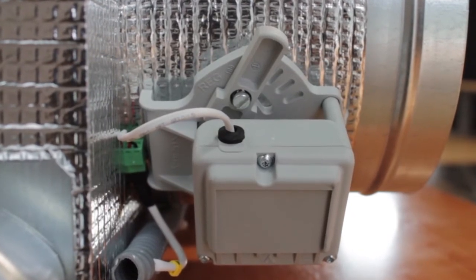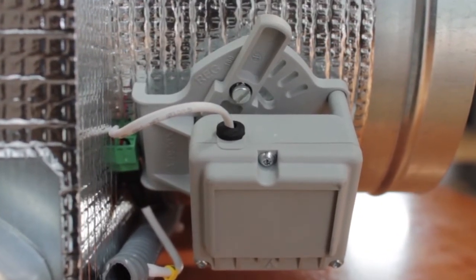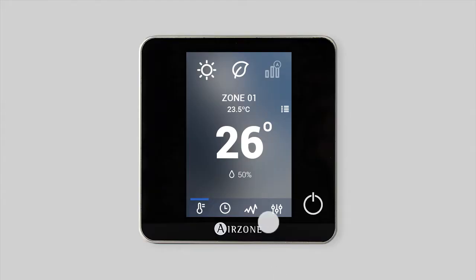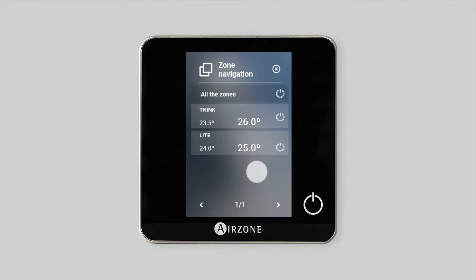To balance the airflow, repeat these steps: put all the zones on demand and use an anemometer to measure the airflow at all outputs.